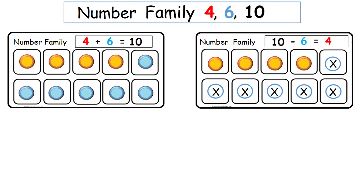Now show kids how the same number family — with a combination of 4, 6, and 10 — is used for subtraction. 10, all the circles together, minus 6 blue circles equals 4. So 10 take away 6 equals 4.